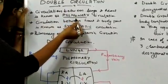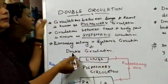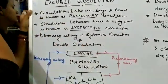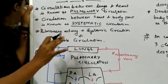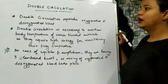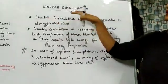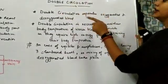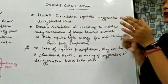Both pulmonary circulation and systemic circulation are combinedly known as double circulation. Next, hum log discuss karenge the importance of double circulation. So double circulation separates oxygenated and deoxygenated blood.